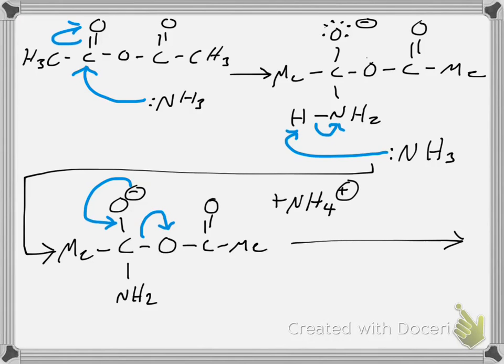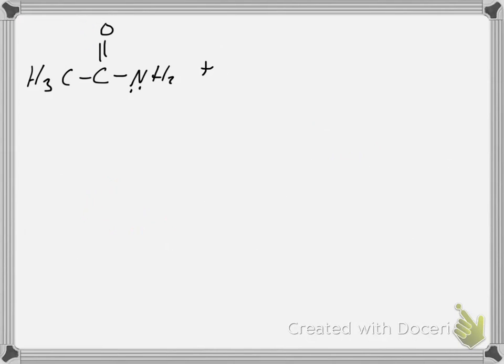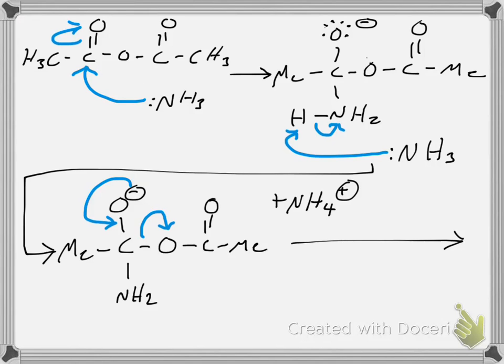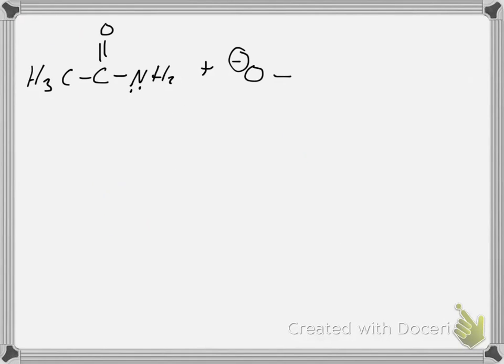And what else do we have? Well, we cleaved off this other side of the molecule over here. So now that we cleave that off, it has become an anion, the acetate anion that we talked about earlier, the oxygen. And this has a negative charge. And it is attached to a carbonyl group, which was never touched, and another methyl group.